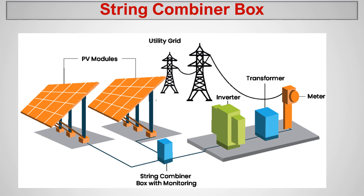In this picture we have two sets of PV modules — we call them two sets of PV strings. That PV string is connected to the string combiner box. This is a string combiner box. Its basic function is to combine different strings. We have two strings here — string one and string two — and these two strings are combined.